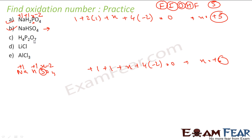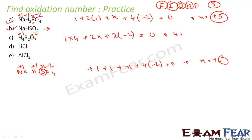Next: H₂P₂O₇. Apply the rules — not a free element, not an ion. Oxygen is minus 2, hydrogen is plus 1. Now only one variable x remains for phosphorus. Sum rule: 4 hydrogens at plus 1, plus 2 phosphorus at x, plus 7 oxygens at minus 2, equals 0. Solving gives x equals plus 5. So phosphorus oxidation state is plus 5.